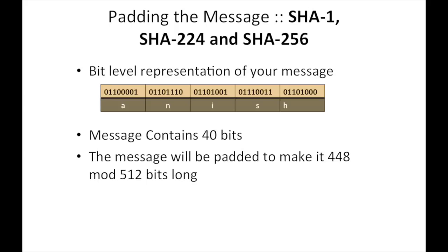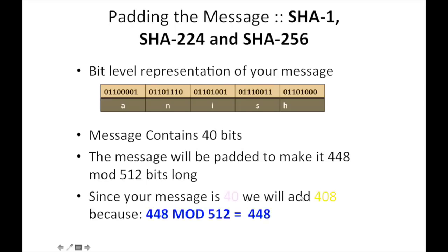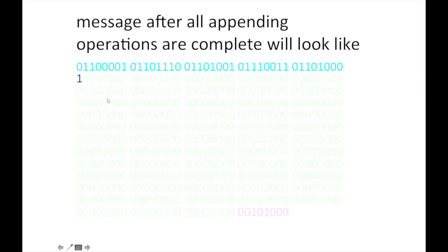I have to append certain zeros and one to make it 512 bits long. I will add 407 zeros, because 448 mod 512 is 448. This red one shows the message A-N-I-S-H, then we'll append one, then we'll add 407 zeros, and finally we'll add the length of the message. This makes a 512 block, and this block will go to the algorithm and produce a message digest.